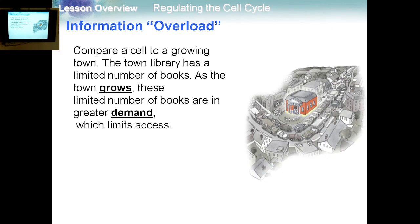Let's compare the cell to a growing town. The town library has a limited number of books — similar to the cell that has a limited amount of DNA. Once the town grows, it needs more books, more information for the growing population, similar to the cell. Once the cell grows, it needs more DNA. The limited number of books are in greater demand, which limits the population's access. The same similarity is happening inside the cell — the cell needs more DNA, and that limits the access of the cell's components to the DNA.